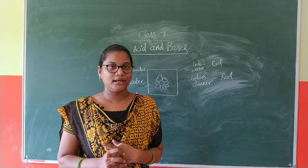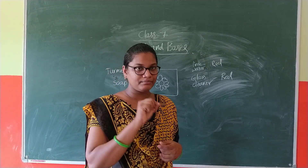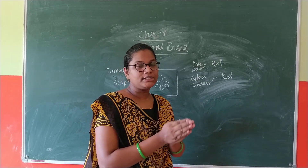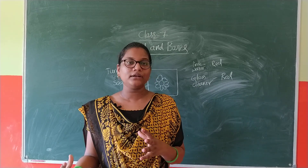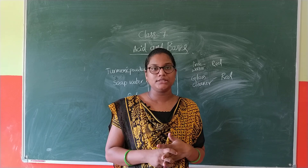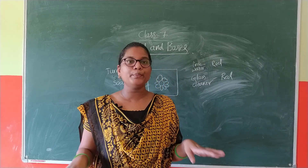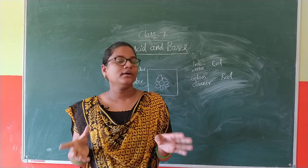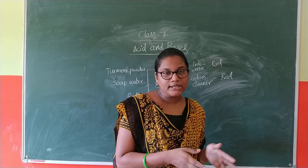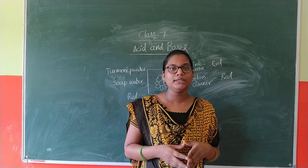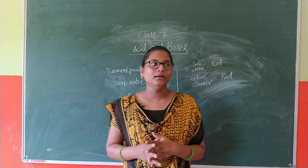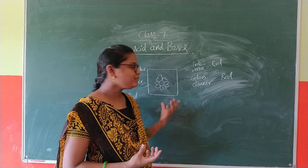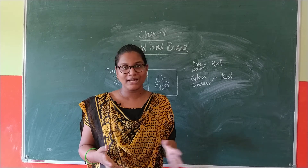In this class, we discussed turmeric powder as a natural indicator and the concept of basic nature. When a natural indicator reacts with a basic substance, they give a colour change — that colour is red. Not all components give a red colour, but turmeric powder with soap water does. Some natural indicators mingled with basic substances give a colour change. This is a very easy experiment — just try it at home and observe the colour change.